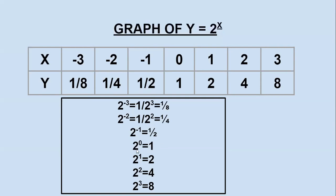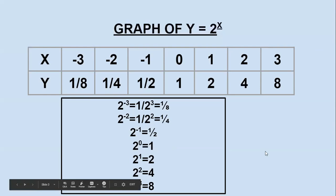When x is 0, using the rule a to the power of 0 is equal to 1, we get 2 to the power of 0, which is also 1. Like that, we found all the values in the table.